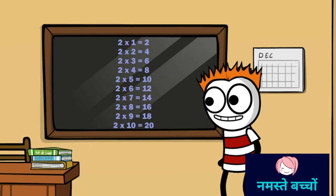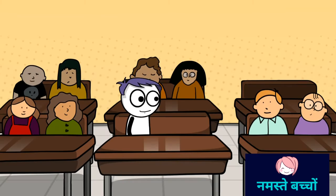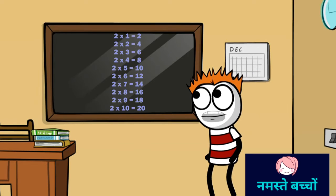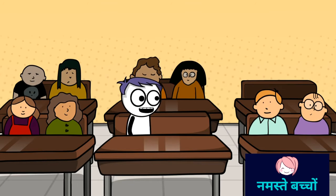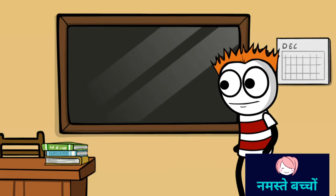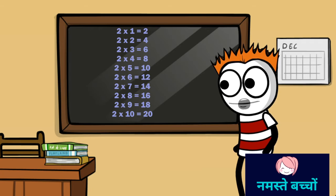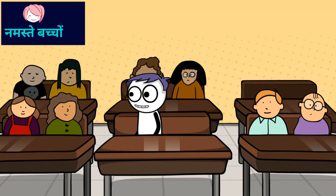2 threes are 6. 2 threes are 6. 2 fours are 8. 2 fours are 8. 2 fives are 10. 2 fives are 10.